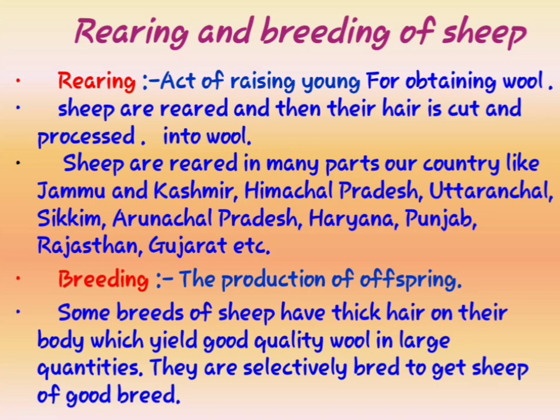The next word is breeding. What is breeding? There are so many types of sheep — just like there are so many varieties of dogs, there are many varieties of sheep. Some sheep will yield a good amount of wool and good quality wool, and that's why we prefer those sheep.